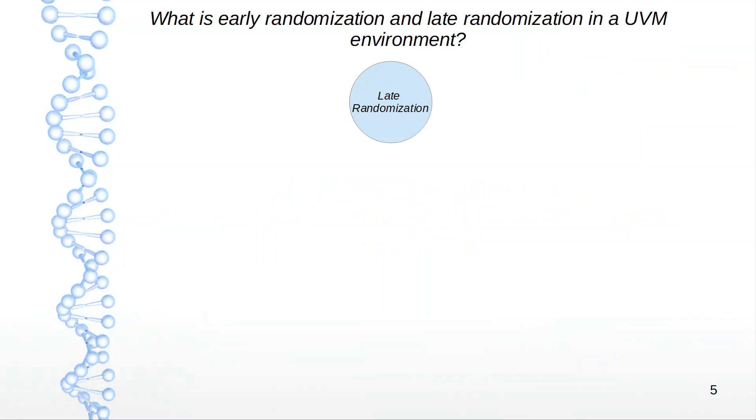So what is it? Both early and late randomization refer to the order in which three methods get called: start_item, finish_item, and randomization on a transaction, for instance.